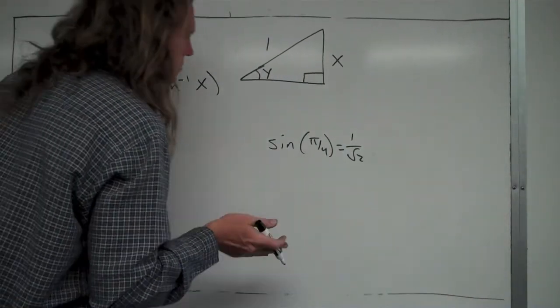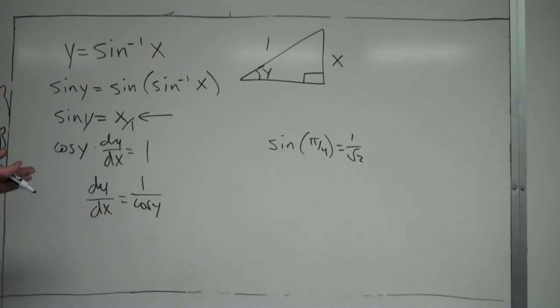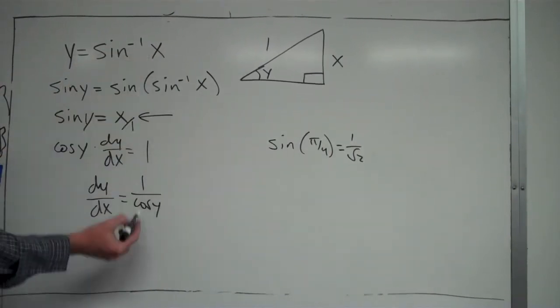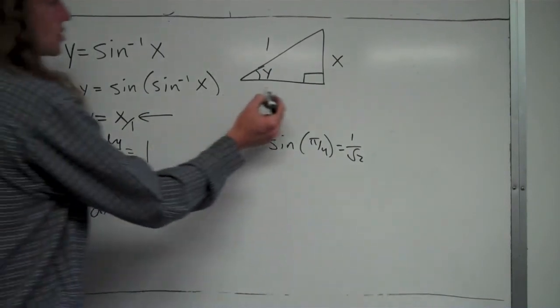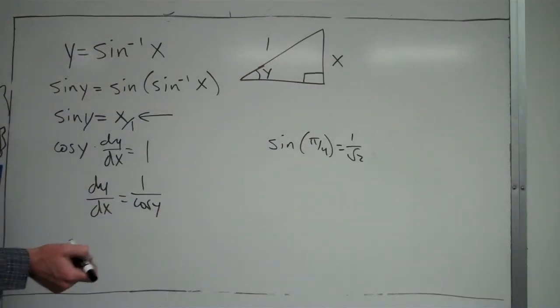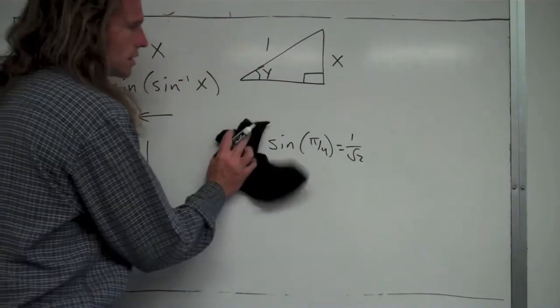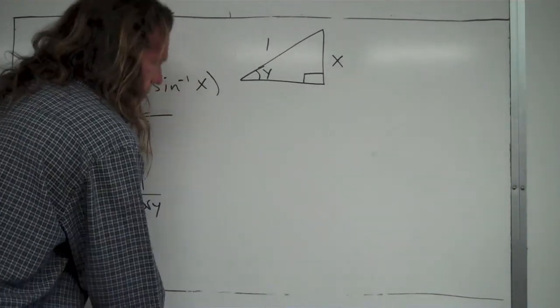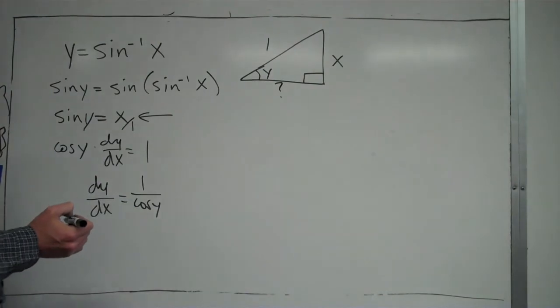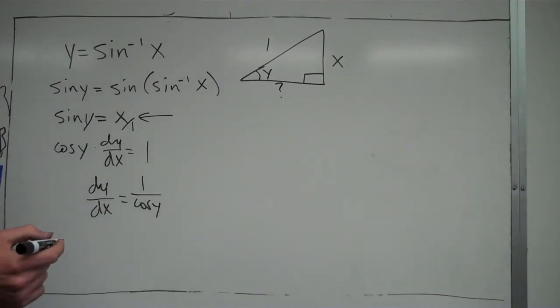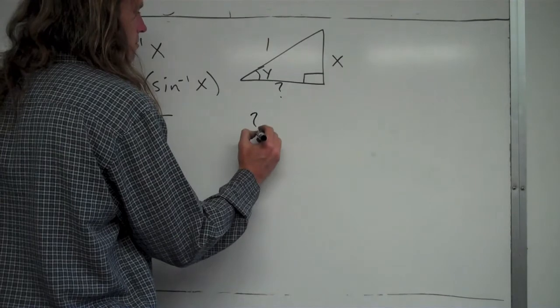The reason why I'm doing that is because now I can use this triangle to figure out what cosine of y is equal to. Cosine of y equals adjacent over hypotenuse. So in order to get this going, I need to figure out this missing side. Let's for the moment just call it question mark.